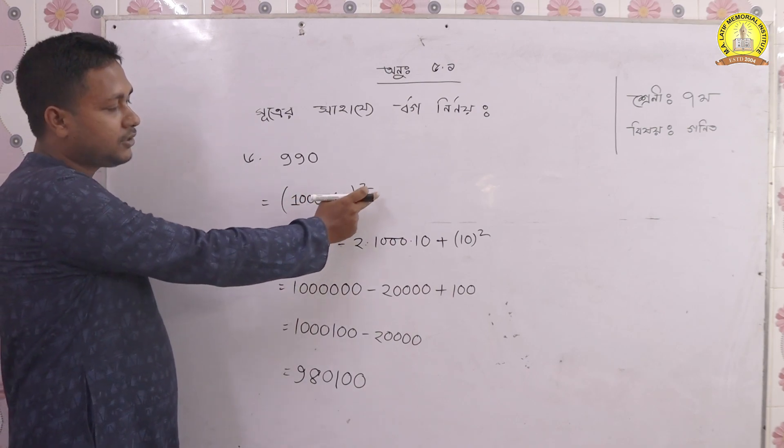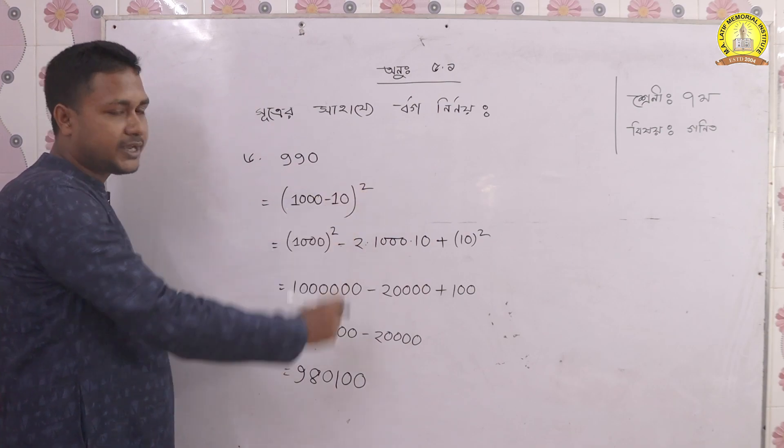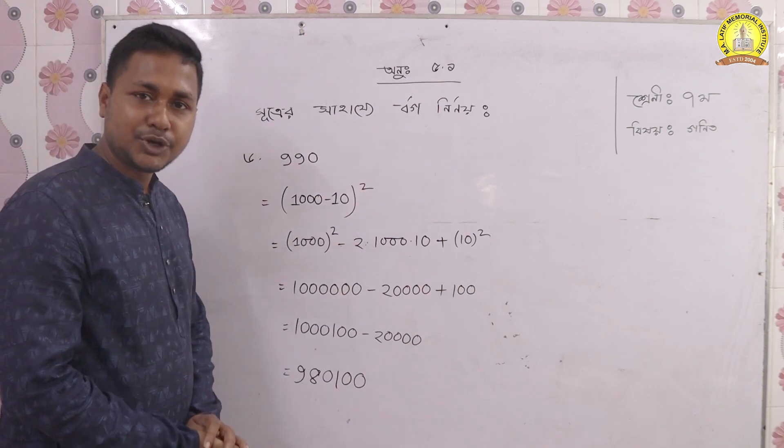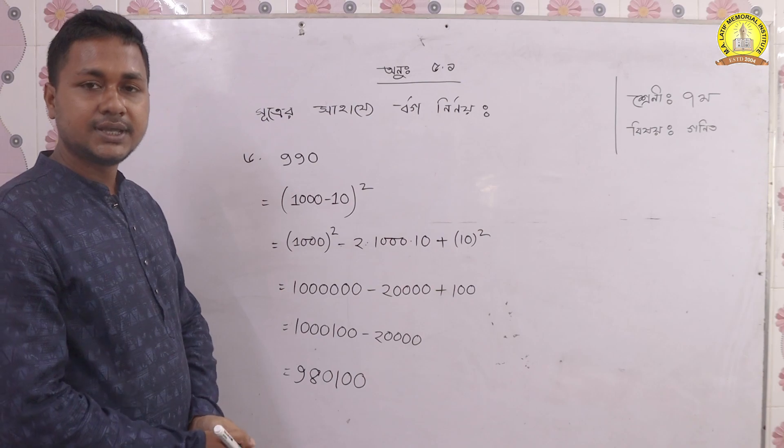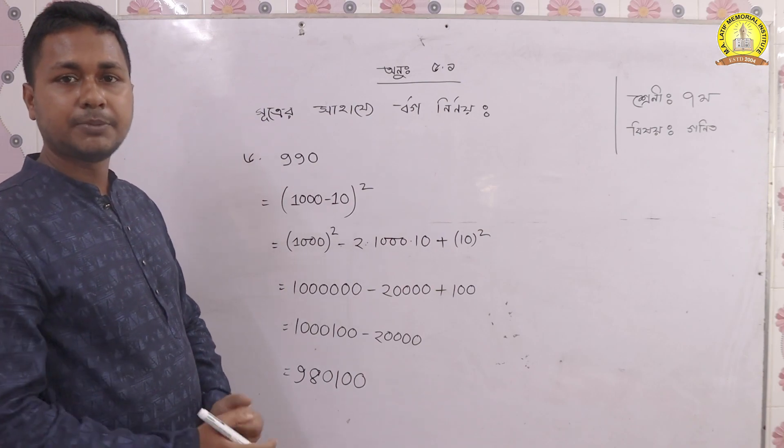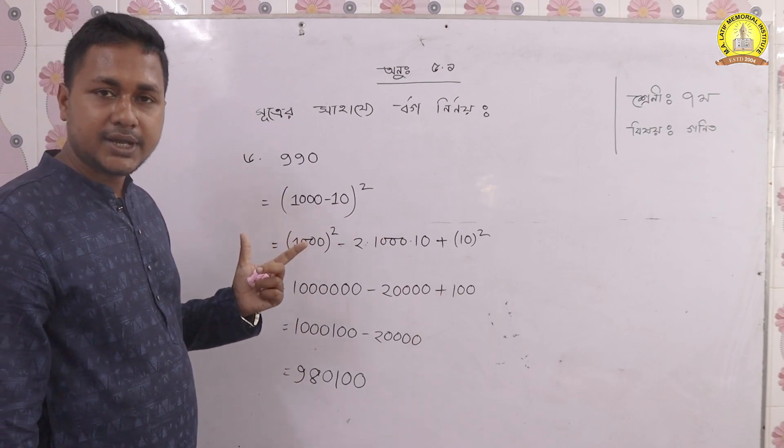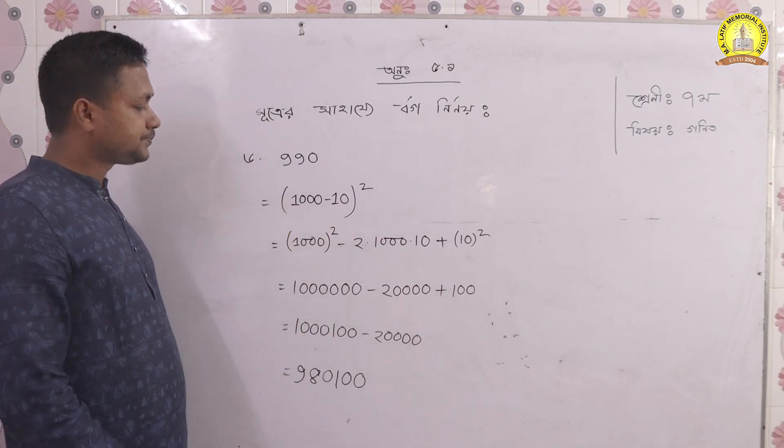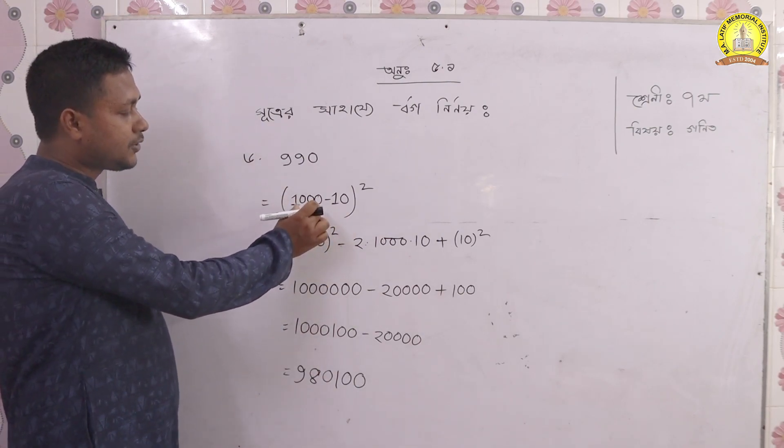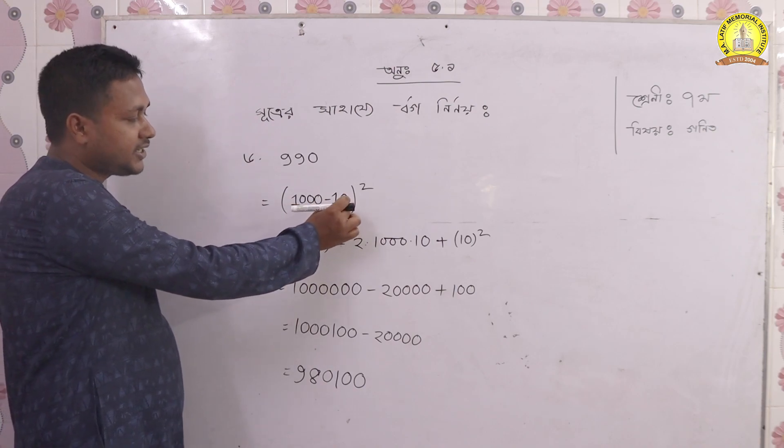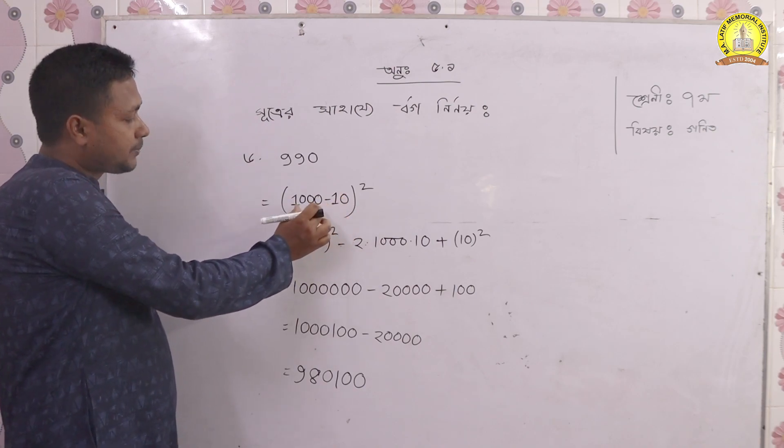So we have a minus b whole square. This is a minus b whole square, the middle of a minus b whole square. The minus b whole square is a squared minus 2ab plus b squared. The way a has now become 1000, now b has become 10.